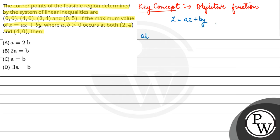Now firstly we have first corner point is (0,0), so here Z value is 0. Next is (4,0), so Z is equal to 4A. And at (2,4), Z is equal to 2A plus 4B. At (0,5), Z is equal to 5B.